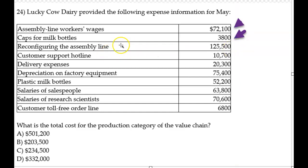Reconfiguring the assembly line would be more of a design issue. It might have to do with production, but it wouldn't be in the value chain — it would be more of a design expense. Customer support hotline, no. Delivery expenses are tempting, but delivery is a separate category in the value chain.